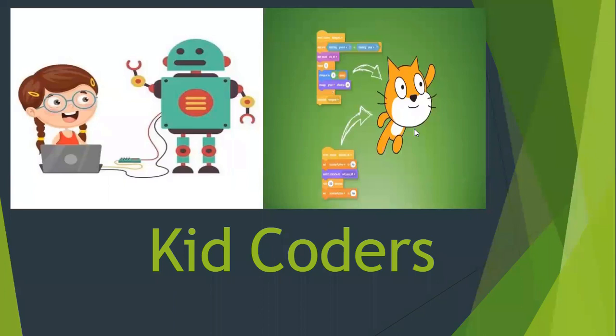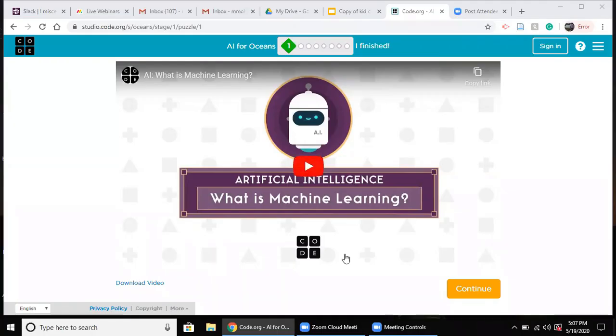Tonight we'll be using code.org and then we'll be using a practice activity for artificial intelligence. We'll be learning about what artificial intelligence is, and we'll also be doing a small practice on how you can create artificial intelligence by yourself. Let's start with a video about what is artificial intelligence and what is machine learning. We'll watch this video and then I'll explain a little bit more before we go into today's activity.